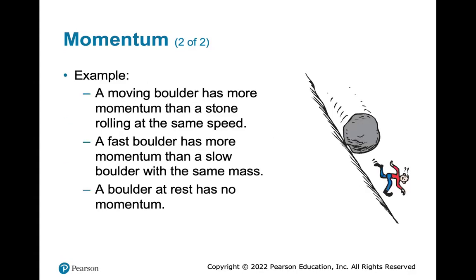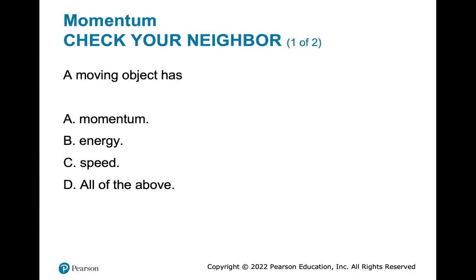A moving boulder has more momentum than a stone rolling at the same speed. A fast boulder has more momentum than a slow boulder with the same mass. A boulder at rest has no momentum — zero velocity means no momentum, so there has to be some speed or velocity for there to be momentum. A moving object has momentum, energy, speed — all of the above.